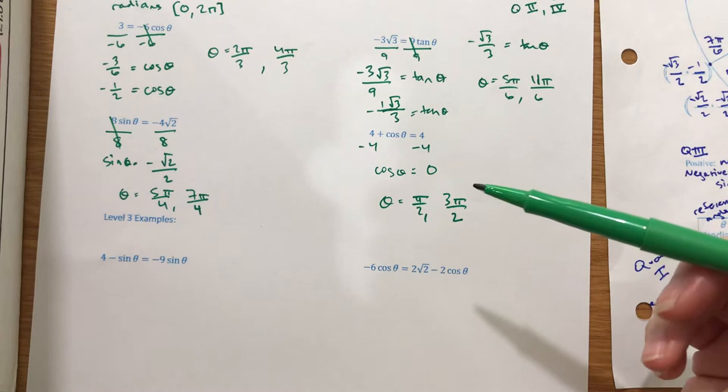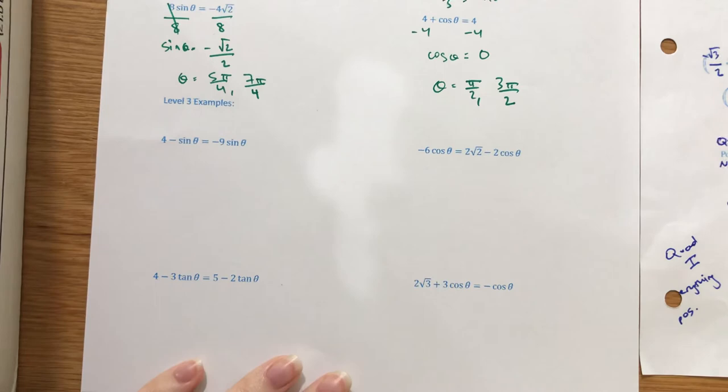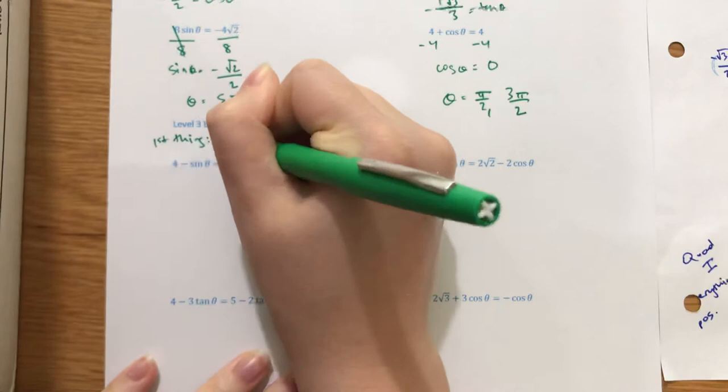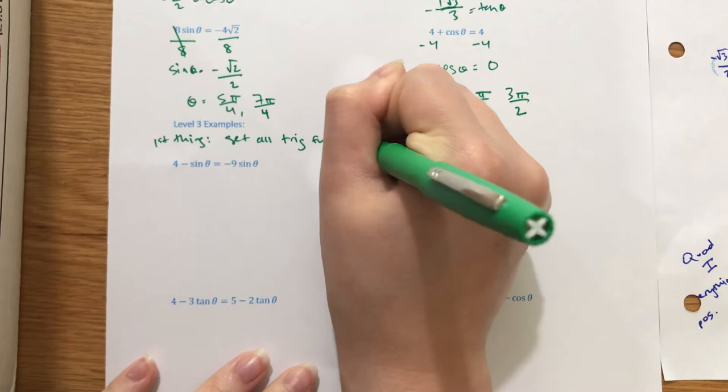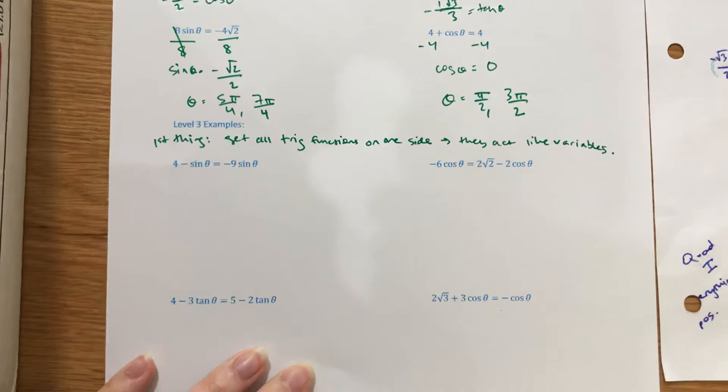Level 3 examples just have some more steps. Specifically, there are sines or cosines or whatever on both sides. So the first thing you have to do is get all trig functions on one side — they act like variables, like having x's.